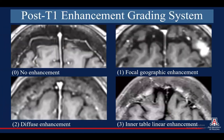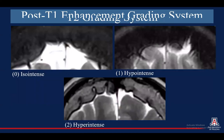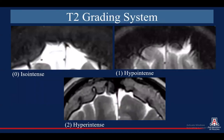We also applied a subjective scale for the post-contrast-enhanced T1 images, where categories included no enhancement, focal enhancement, diffuse enhancement, or just intratrabecular linear enhancement. For the T2 grading system, we graded it as isointense, hypointense, or hyperintense.